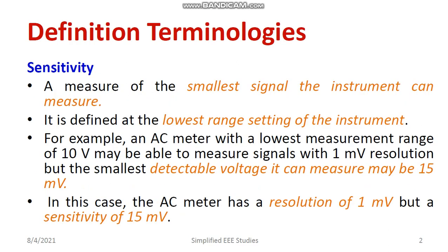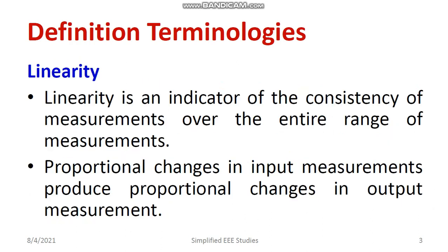For example, an AC meter with a lowest measurement range of 10 volts may be able to measure signals with 1 millivolt of resolution. Here, 15 millivolts is the sensitivity — the smallest detectable voltage — while 1 millivolt is the resolution — the smallest measurement range that can be recorded. So the difference is: the smallest range that can be measured is called resolution, while the smallest amount of voltage or current that can be detected is called sensitivity.